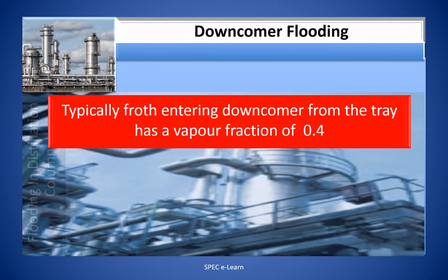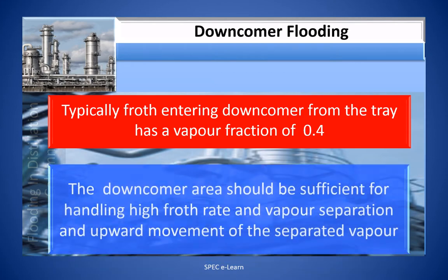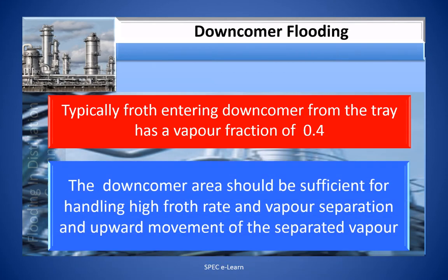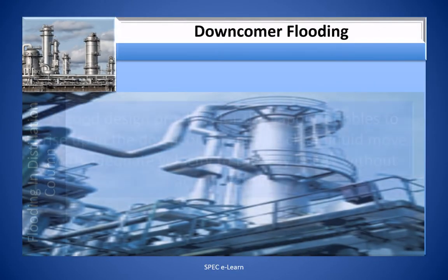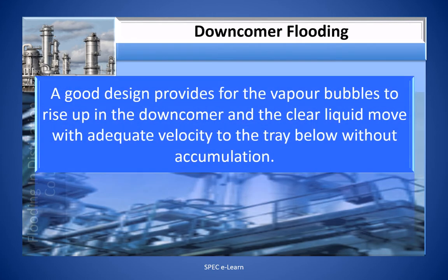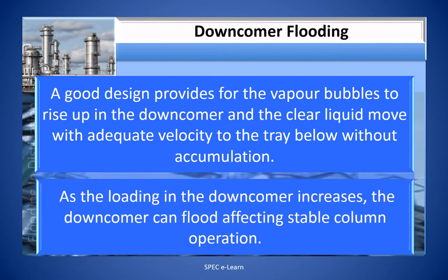Typically, the froth entering the downcomer from the tray has a vapor fraction of 0.4. The downcomer area should be sufficient for handling the high froth rate, vapor separation, and upward vapor movement. A good design provides for the vapor bubbles to rise up in the downcomer and the clear liquid to move with adequate velocity to the tray below without accumulation.